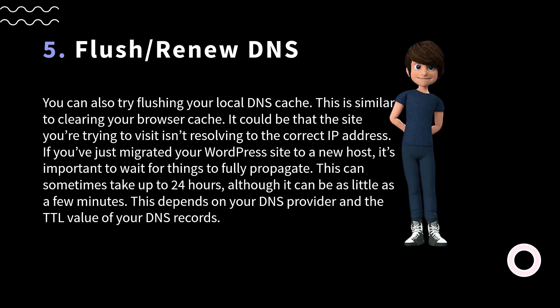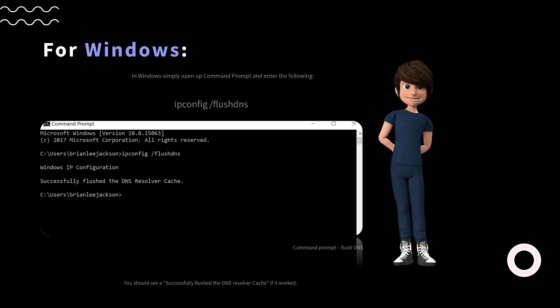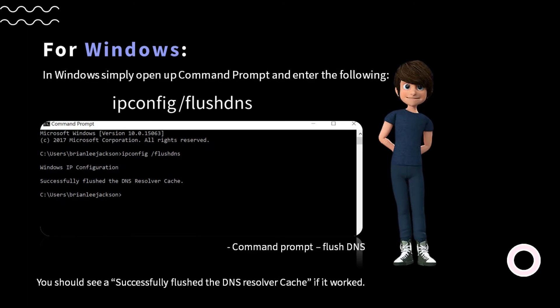The fifth method: flush and renew DNS. You can also try flushing your local DNS cache, which is similar to clearing your browser cache. It could be that the site you're trying to visit isn't resolving to the correct IP address. If you've just migrated your WordPress site to a new host, it's important to wait for things to fully propagate — this can sometimes take up to 24 hours. For Windows, open Command Prompt and enter: ipconfig /flushdns. For Mac, enter in Terminal: dscacheutil -flushcache.